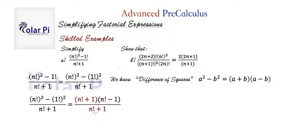The denominator is n factorial plus 1. So we cancel the n factorial plus 1 factor here in the numerator with the n factorial plus 1 in the denominator.